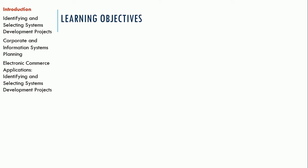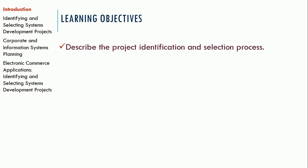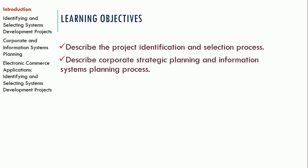Starting off with identifying and selecting projects, what we're doing here is trying to figure out what projects are appropriate or will bring value to the organization. As a systems analyst, we're called upon to use our expertise and understanding of both the business and technical aspects to determine what makes the most sense for a project. In this slide deck, we'll talk about the project identification and selection process, and also touch on corporate strategic planning and information systems planning.